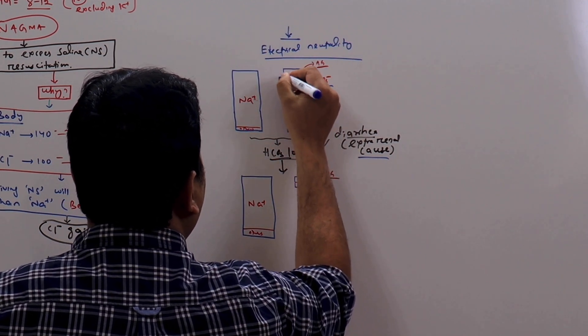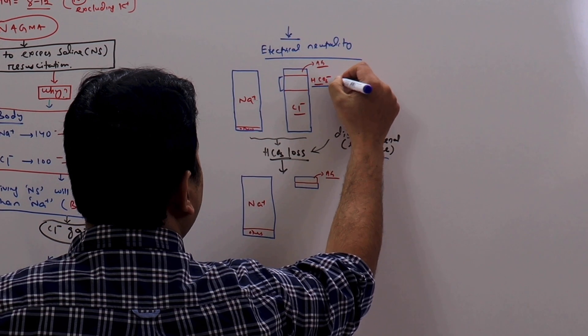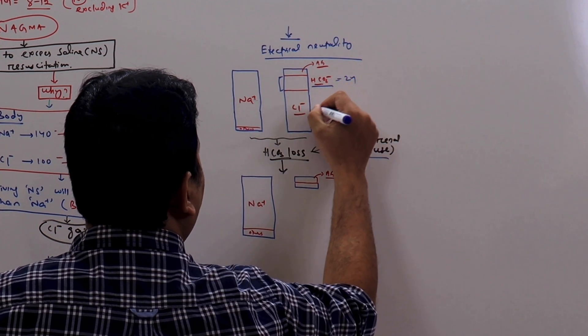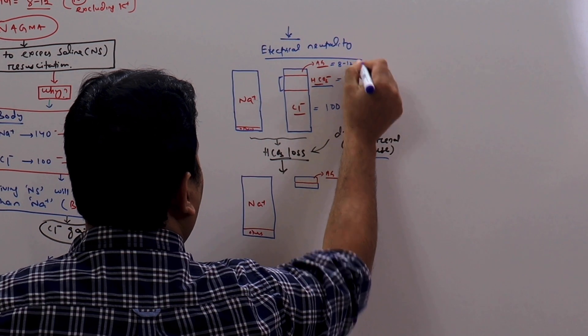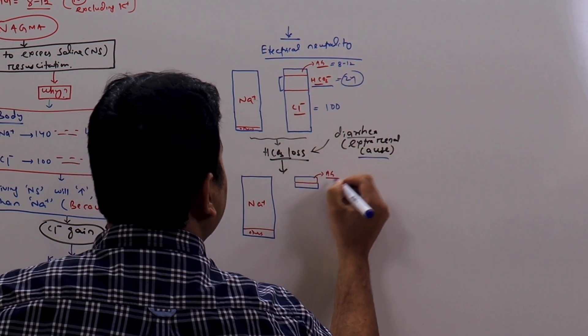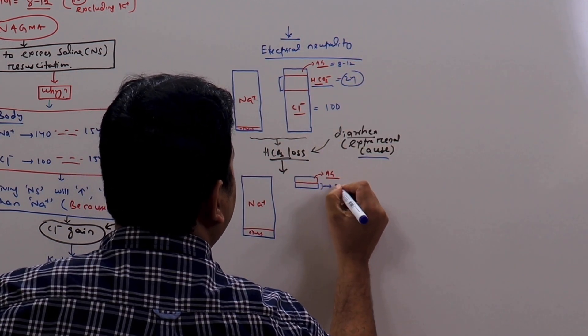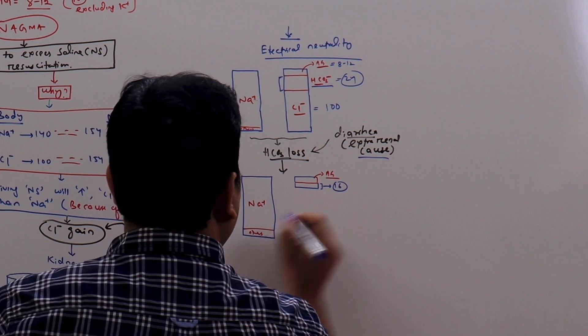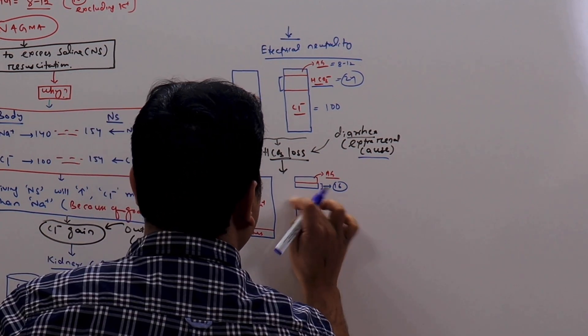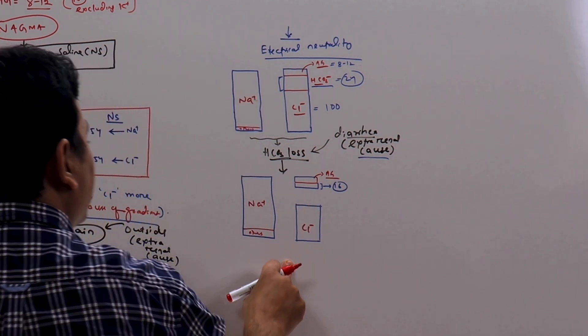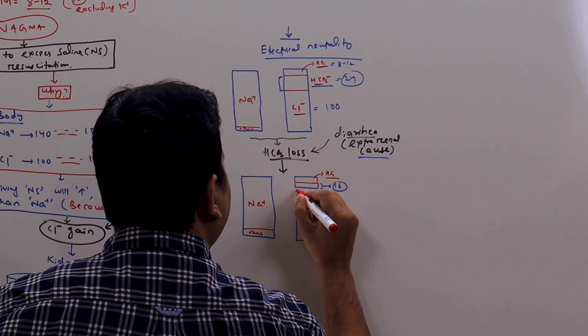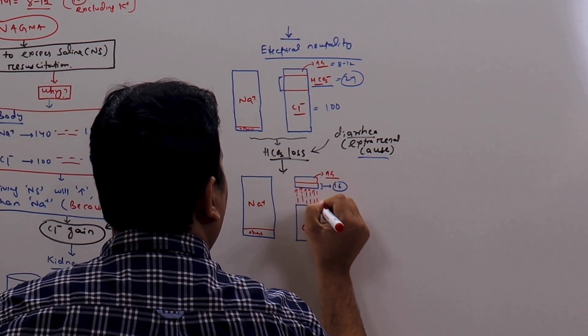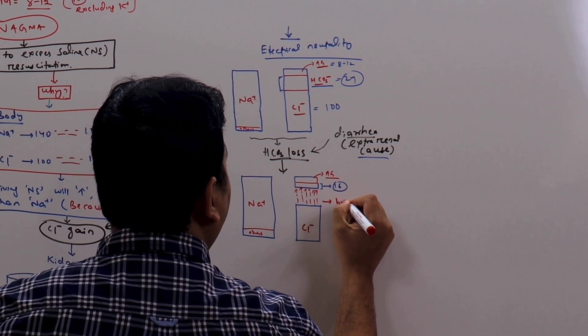The bicarbonate level here, it decreases. Let us say it is 24 here. Chloride is 100. Anion gap is around 8 to 12. The bicarbonate level decreases because of diarrhea. Let us say it becomes 16. And the chloride level remains the same. Now what happens? To maintain the electrical neutrality, this chloride will rise. And the patient becomes hyperchloremic.